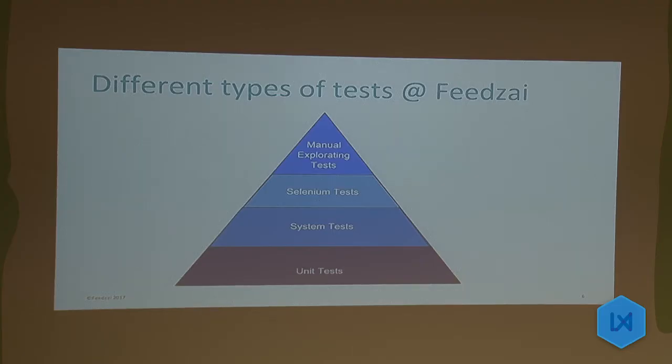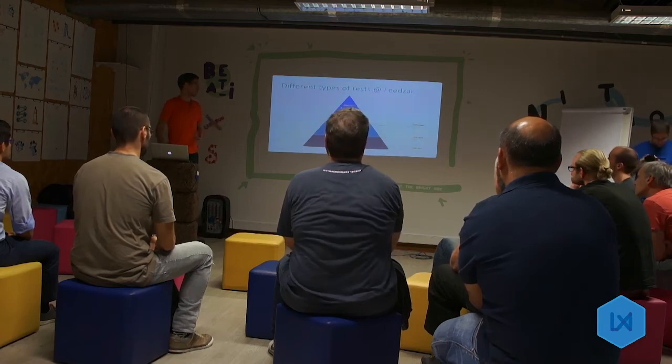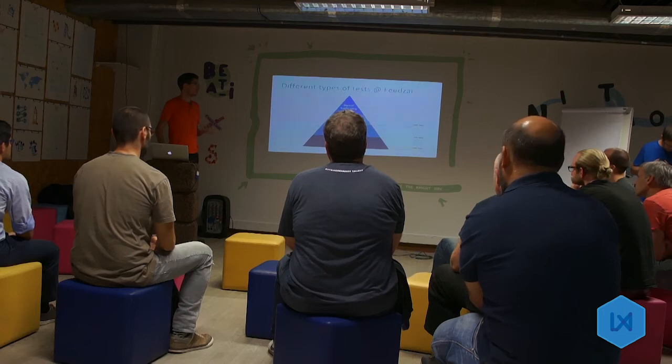We have several layers of tests — this is basically very standard. We have unit tests; in total across front-end and back-end, we have 17,000 unit tests. We have system tests that are integration tests for the back-end. And we have Selenium tests, which is what I'm going to talk about today — 1,000 Selenium tests that test the application end-to-end. We also do some manual exploratory testing.